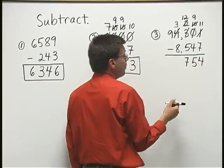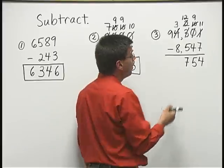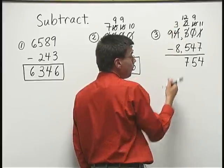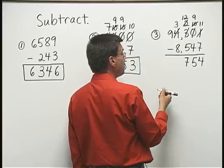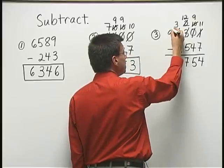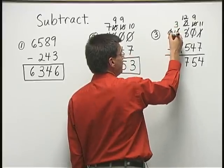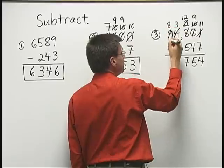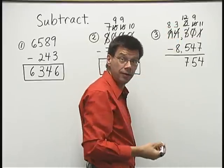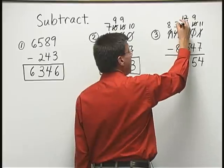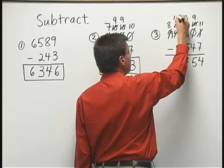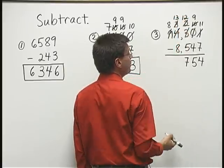And I want to subtract in my thousands place now. But I have three, take away eight, I can't do. So, I need to borrow one more time here. I'm going to take one of these ten thousands. So, the nine becomes eight. And the ten thousands that I borrow becomes ten thousands. I add it to the three that's already there. That's now thirteen.